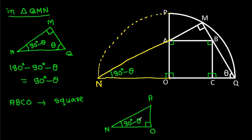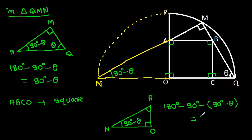Minus theta. So this angle will be 180 degrees minus 90 degrees minus theta, which equals theta. This angle will be theta.